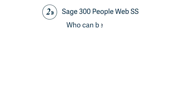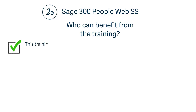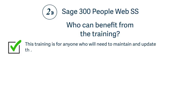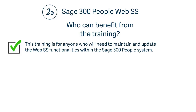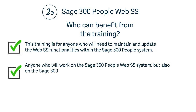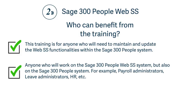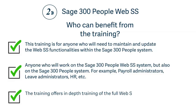Who can benefit from the full training? This training is for anyone who will need to maintain and update the Web SS functionalities within the Sage 300 People system, and anyone who will work on both the Sage 300 People Web SS system and the Sage 300 People system — for example, payroll administrators, leave administrators, and HR. The training offers in-depth training of the full Web SS setup and functionalities.